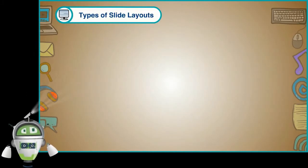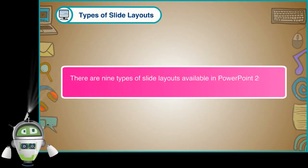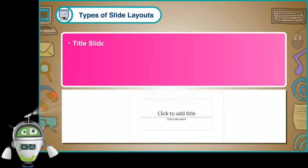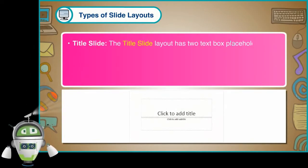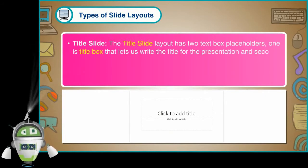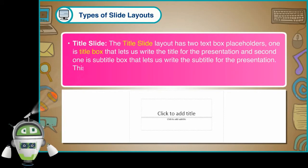Types of Slide Layouts: There are nine types of slide layouts available in PowerPoint 2016 that can be used for creating the slides in a presentation. The Title Slide layout has two text box placeholders: one is the title box that lets us write the title for the presentation, and the second is the subtitle box that lets us write the subtitle for the presentation.